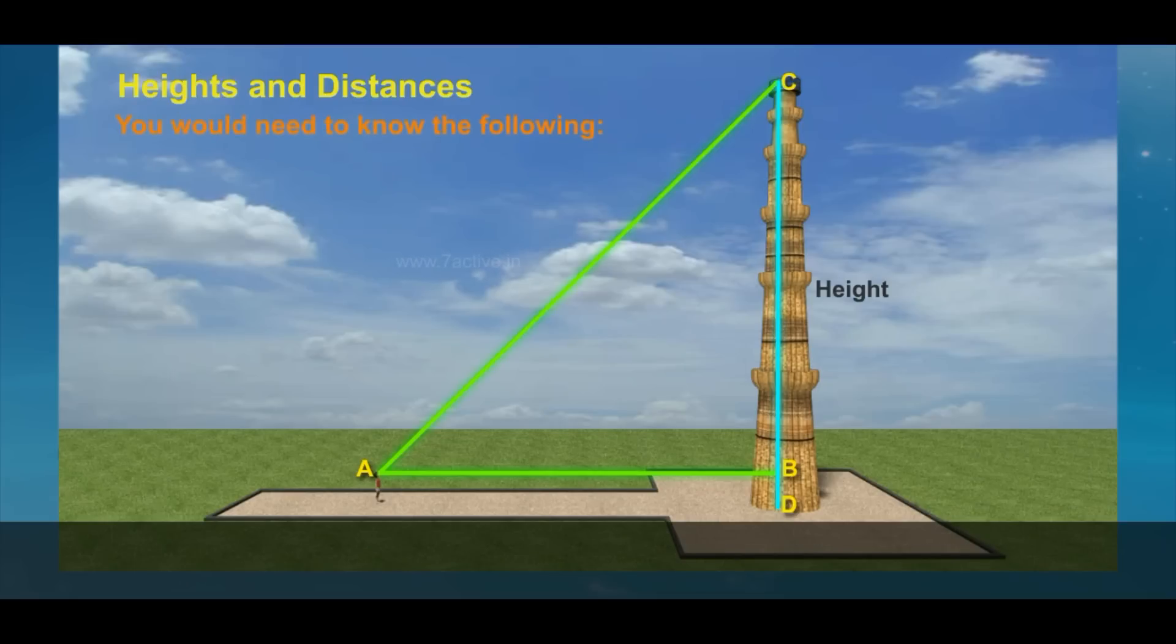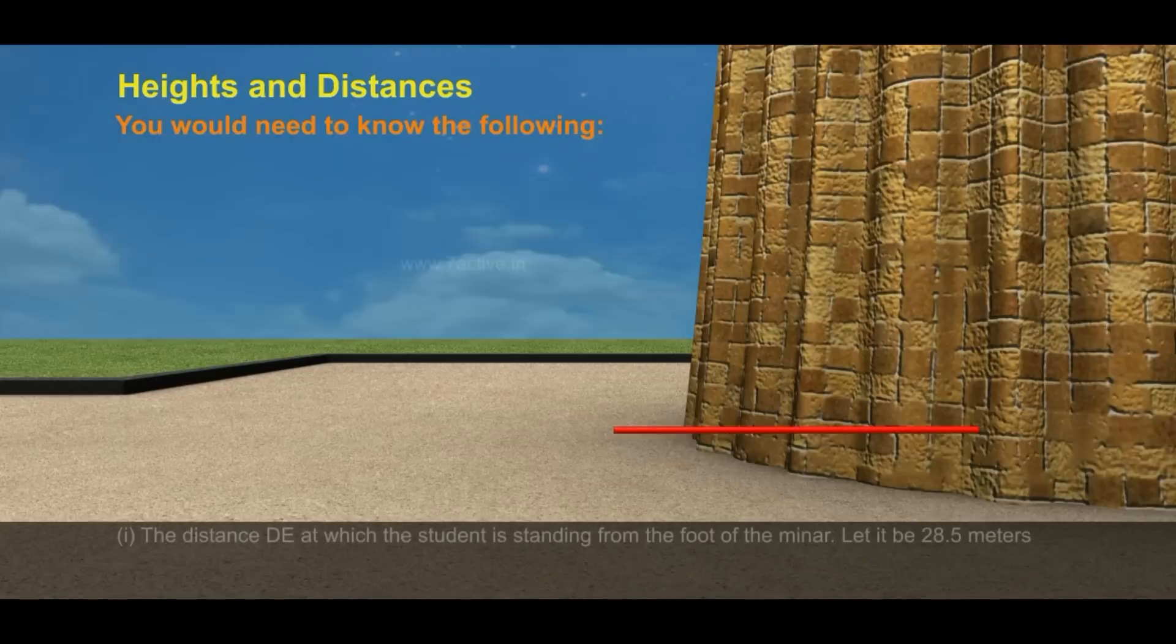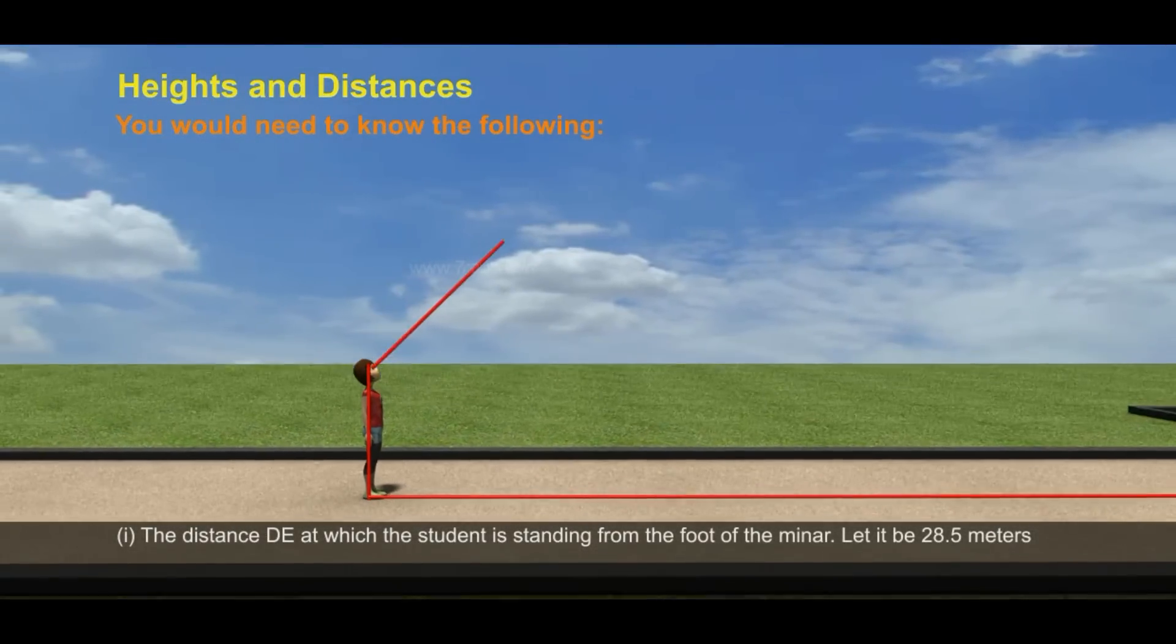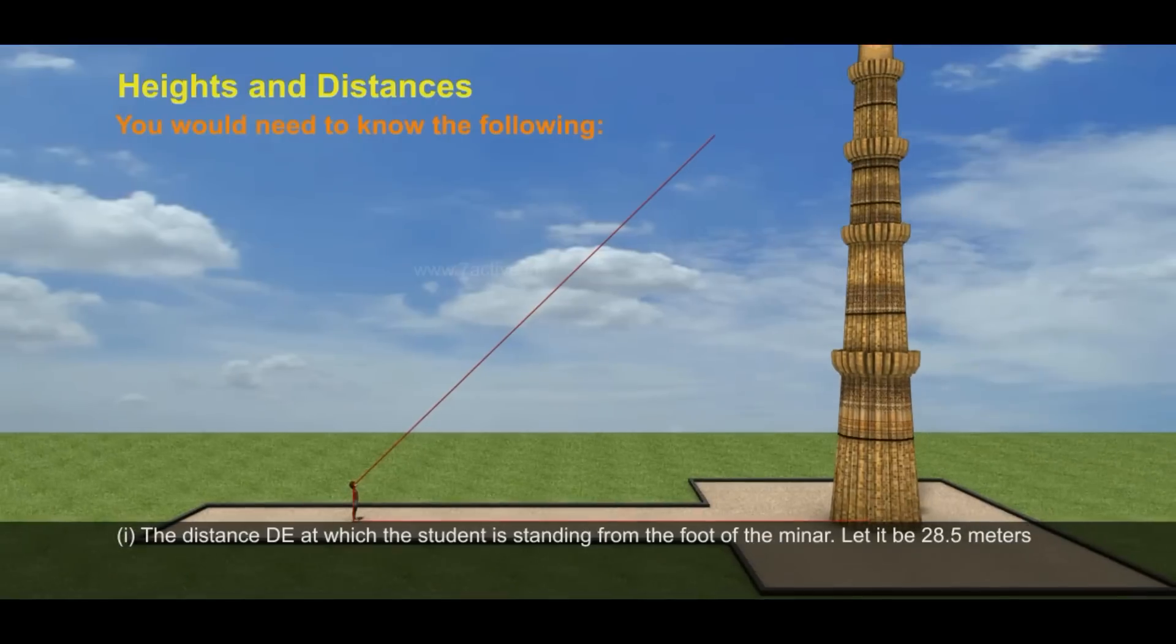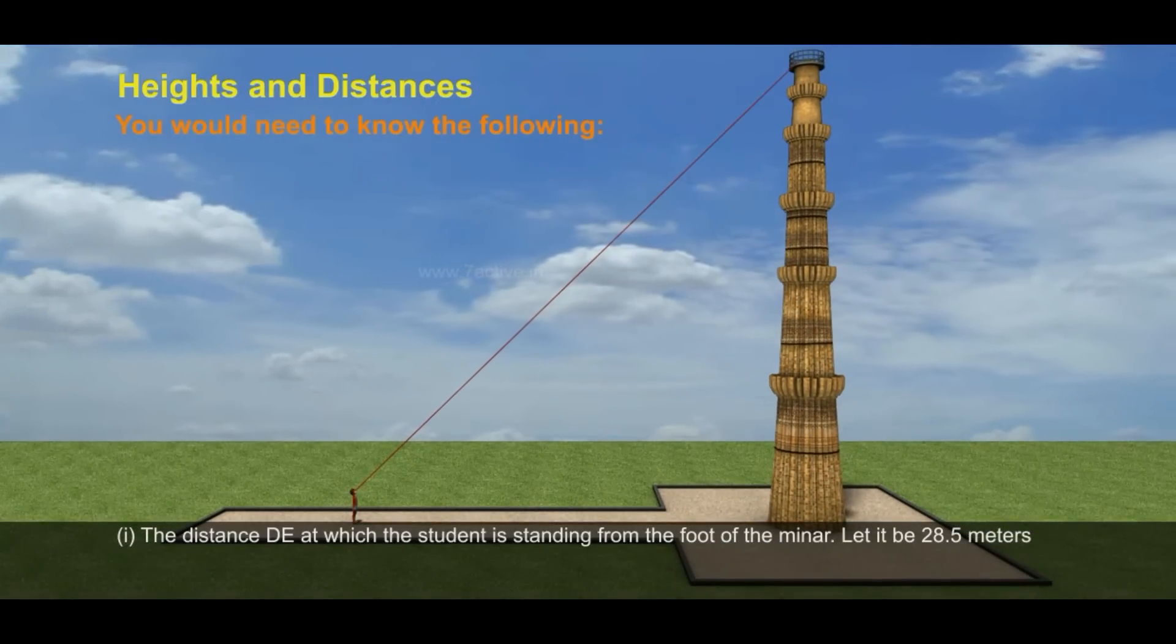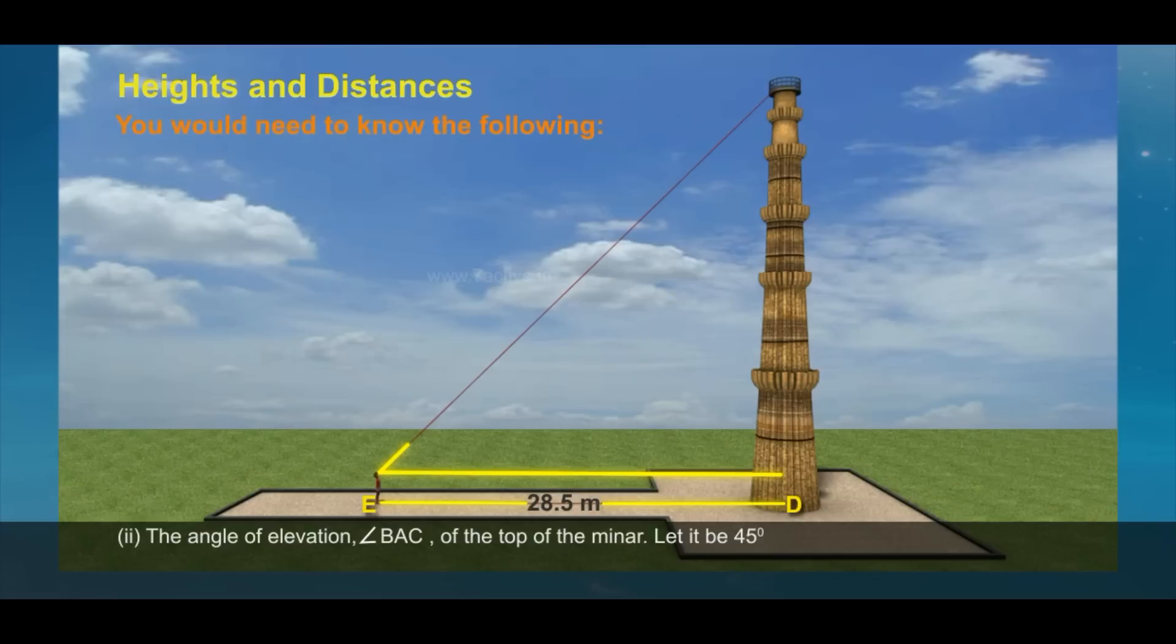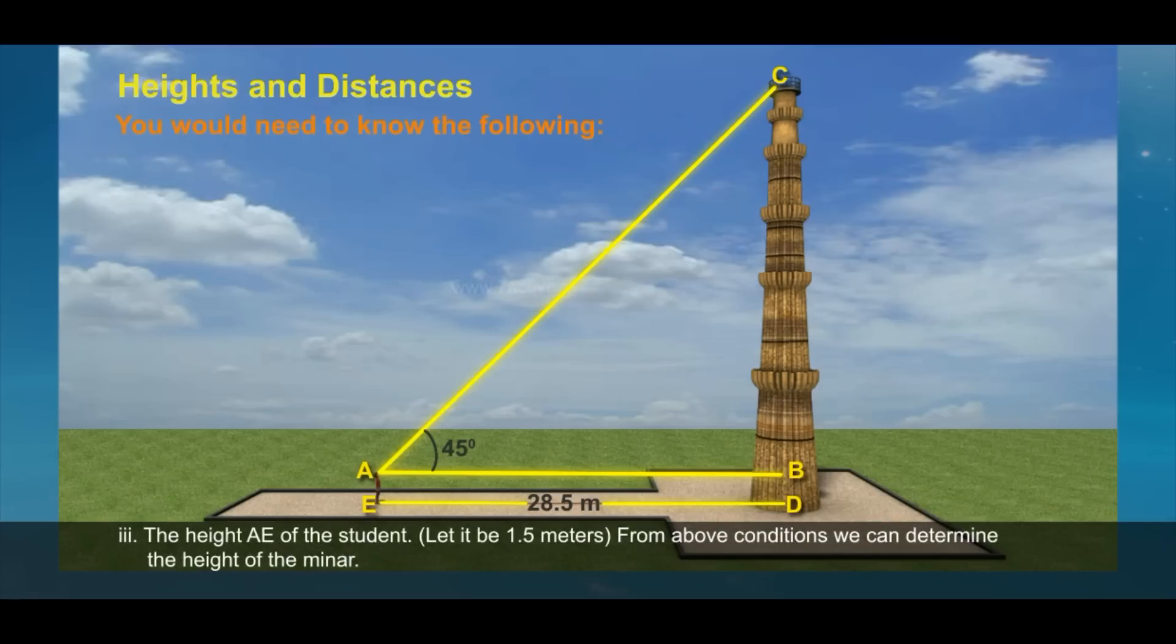You would need to know the following: 1. The distance DE at which the student is standing from the foot of the minar—let it be 28.5 metres. 2. The angle of elevation, angle BAC, of the top of the minar—let it be 45 degrees. 3. The height AE of the student—let it be 1.5 metres.